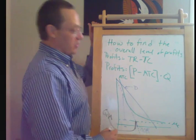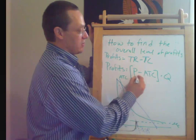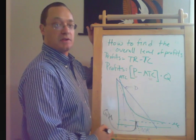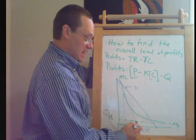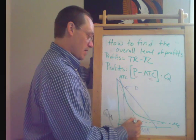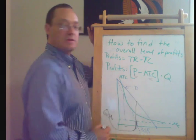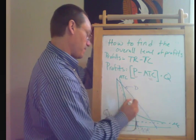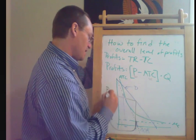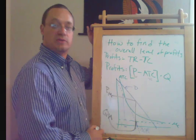Now we want to go ahead and try and figure out what the price and what the average total cost of production are. So we take this quantity. We look up here to the demand curve. And that is the price that the monopolist chooses to charge.